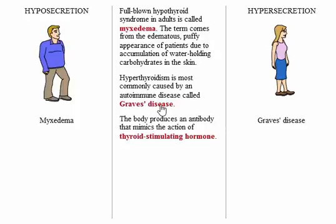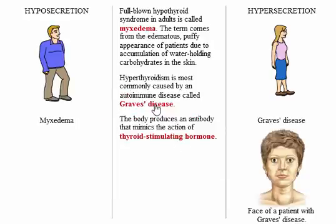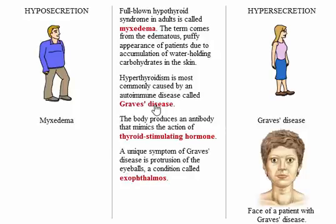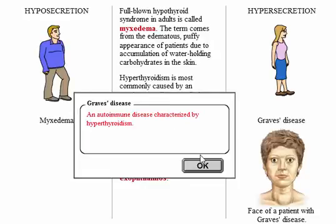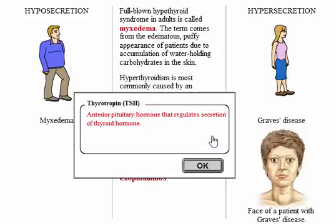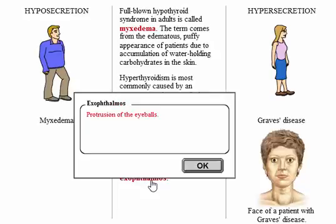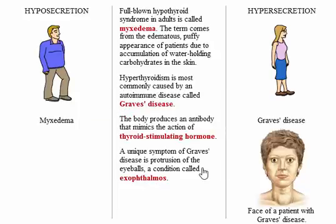The body produces an antibody that mimics the action of thyroid-stimulating hormone. The thyroid gland responds by enlarging and secreting increasing amounts of thyroid hormones. A unique symptom of Graves' disease is protrusion of the eyeballs, a condition called exophthalmos, which results from deposits of water-holding carbohydrates behind the eyes. Click the Graves' disease patient to continue.